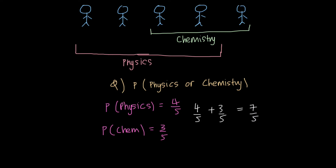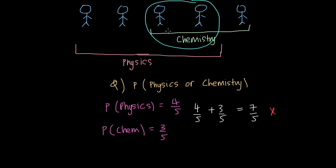But this would give you the wrong answer. We see the probability is already over one, which is wrong. We're saying seven people out of just the five people in the class, and that doesn't make sense logically. So where have we gone wrong here? The answer is with these two students here. These students are being repeated in both sets because they take both chemistry and physics. So when we're calculating the probabilities and adding them up, we are counting these two students again — when we consider the probability of physics and when we consider the probability of chemistry.